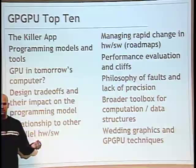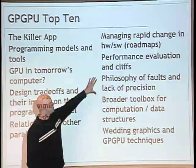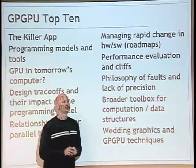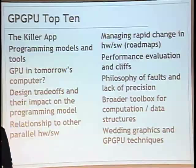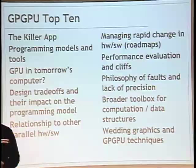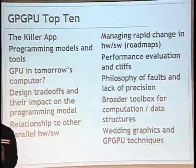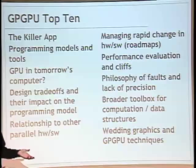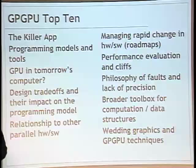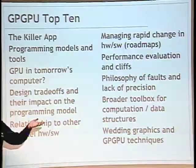Problem seven: faults and lack of precision. In choosing between accurate and fast, GPUs have traditionally chosen fast. They're willing to use non-compliant floating point and do approximate exponent functions in exchange for speed. That doesn't work if you're trying to do nuclear bomb simulation. Also, if you divide by zero on a GPU, you'll never know — buyer beware. As GPUs move toward compute, this needs to change.